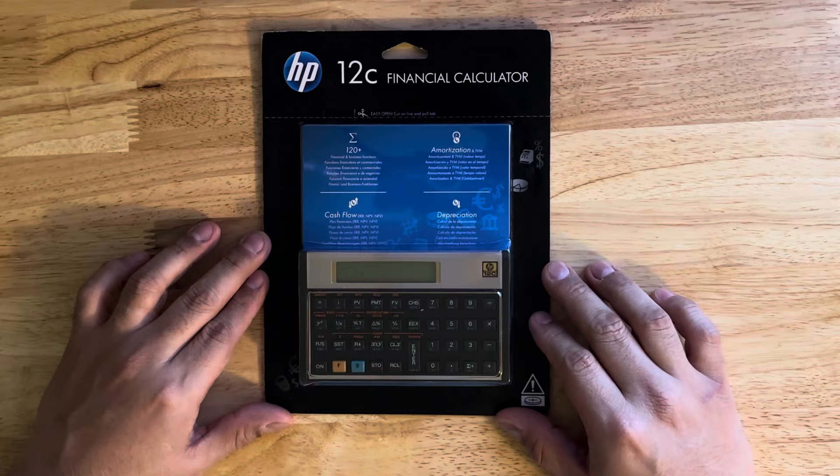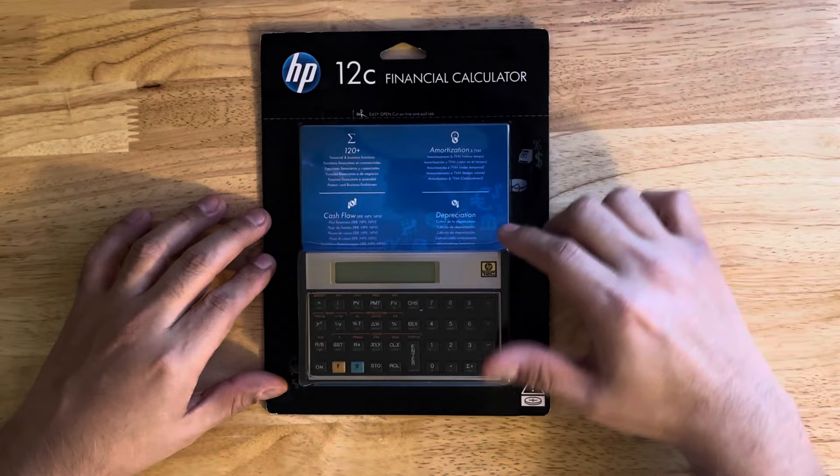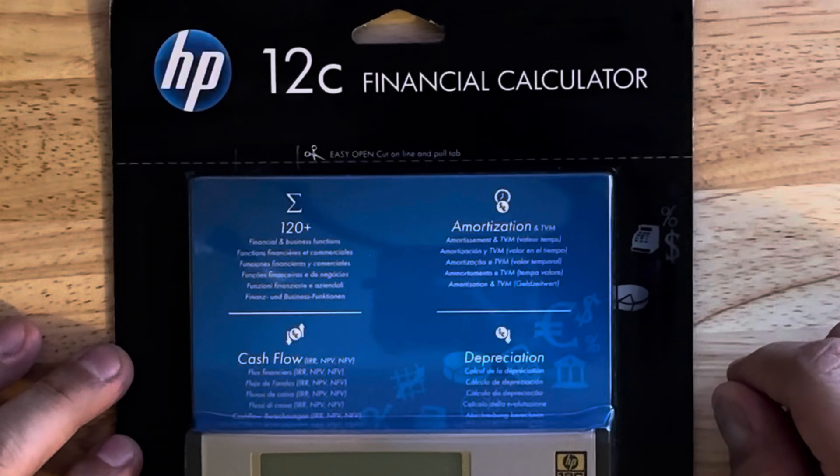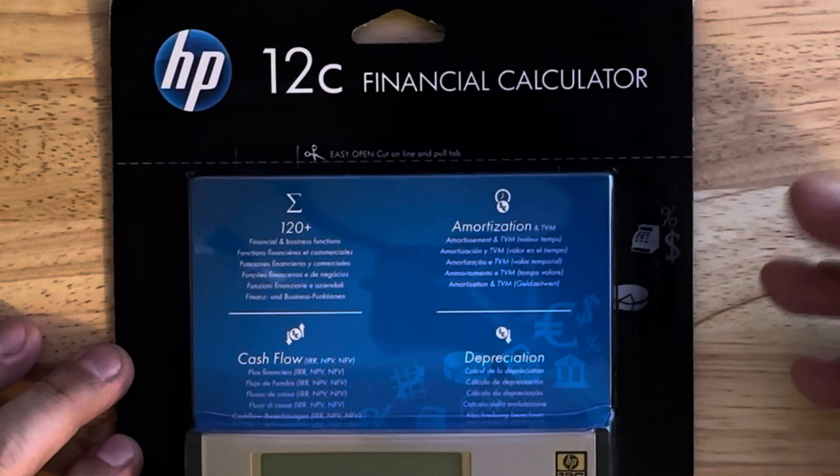It says HP 12C financial calculator. I'll let you zoom in right here but it basically just says a couple of different words. It says 120 plus different things you can do. It has amortization, it has cash flow, and it has depreciation. As you can tell between that, you're either dealing with business or accounting.